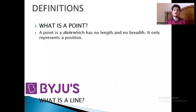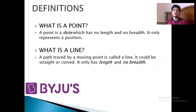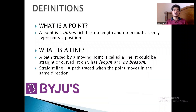Moving ahead, let us understand what is a line. The path traced by a moving point is called a line. A line has no breadth — it only has some length. Now, do not confuse yourself with line and straight line — a line can be straight as well as curved.